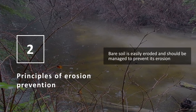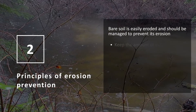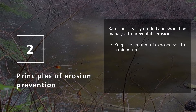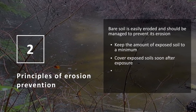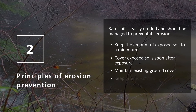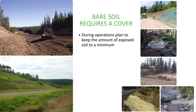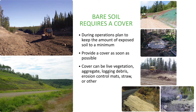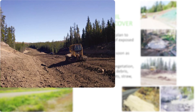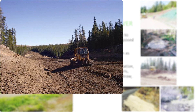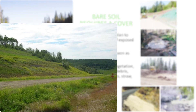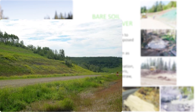Section 2: Principles of erosion prevention. Bare soil is easily eroded and should be managed to prevent its erosion. Key techniques are to keep the amount of exposed soil to a minimum, cover exposed soil soon after exposure, maintain existing ground cover where possible, and keep the ground surface rough rather than smooth. During operations, plan to keep the amount of exposed soil to a minimum and provide a cover as soon as possible. The cover can be live vegetation or inert material like aggregate, logging debris, erosion control mats, straw or other materials. The picture at the top left shows road construction with a lot of exposed soil — a high hazard if heavy rains were to come. The picture at the bottom left shows a site where that hazard has been reduced through establishment of vegetation.